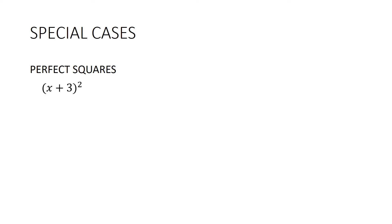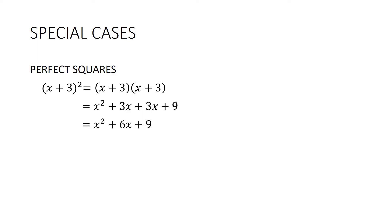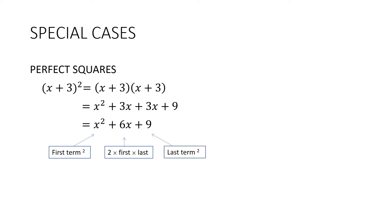We have special cases: the perfect squares. (x + 3)² just means (x + 3)(x + 3). Doing FOIL gives x² + 3x + 3x + 9, which collects to x² + 6x + 9. There's a shortcut: the first term squared, plus 2 times the first times the last, plus the last term squared. So x², plus 2 times 3 times x is 6x, plus 3² is 9 — giving it in one go.